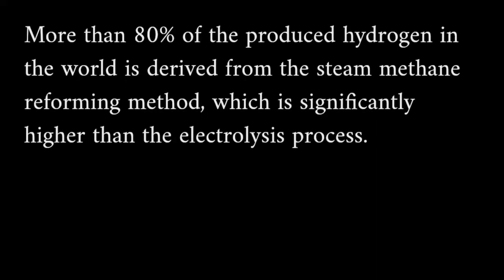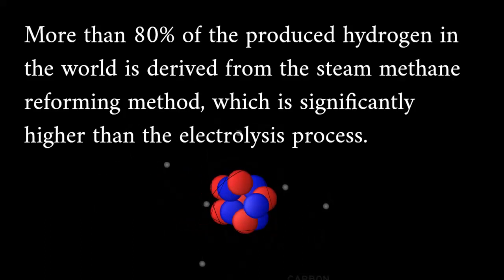More than 80 percent of the produced hydrogen in the world is derived from the steam methane reforming method, which is significantly higher than the electrolysis process. In the steam methane reforming method, natural gas is initially cleaned of impurities.